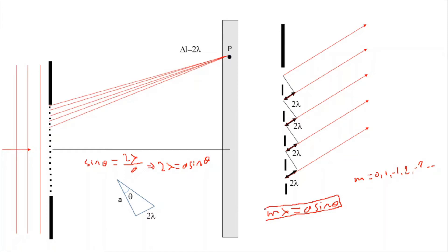As you can see, this formula is completely the same as the formula in the double slit experiment. The only difference is that in problems related to diffraction grating, a is not usually given directly. Instead, the width of the grating is given, and you need to find a. The slit separation a equals W over N, where W is the width of the grating and N is the number of slits.